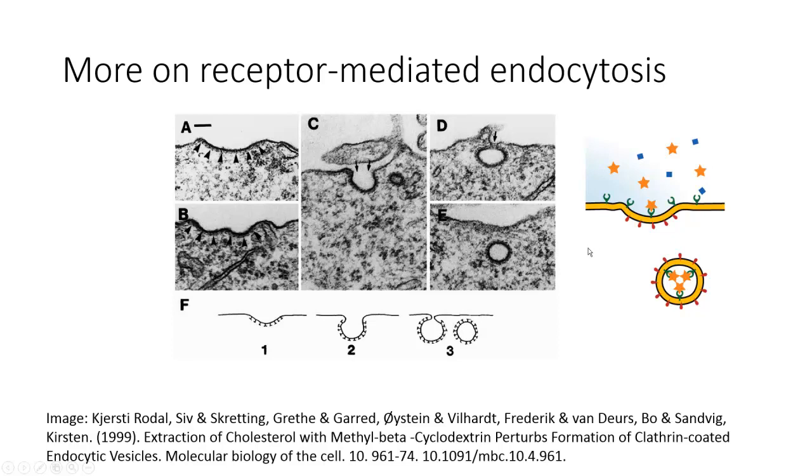If we look more closely at this process in actual tissue, we can see our clathrin-coated pits here. The clathrin is indicated by the arrowheads. You can see right in here the individual clathrin proteins lining this pit.